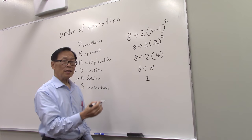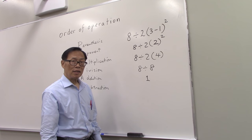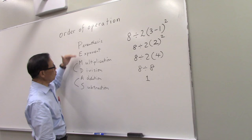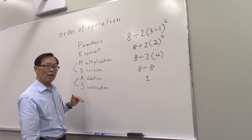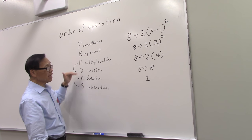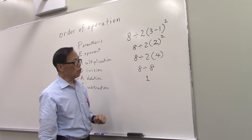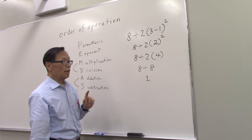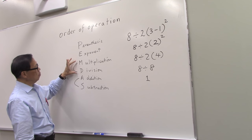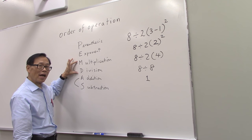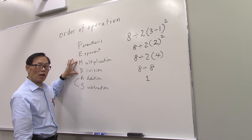Unfortunately, that is not correct. And that is because this order is not accurate. If we follow it meticulously, then we would have this incorrect solution. The reason is, multiplication and division actually has the same priority.